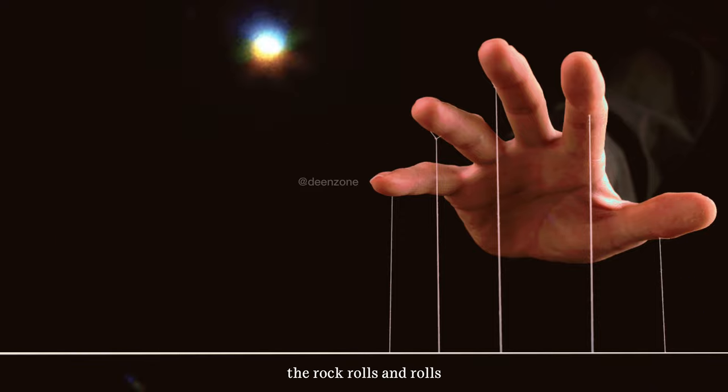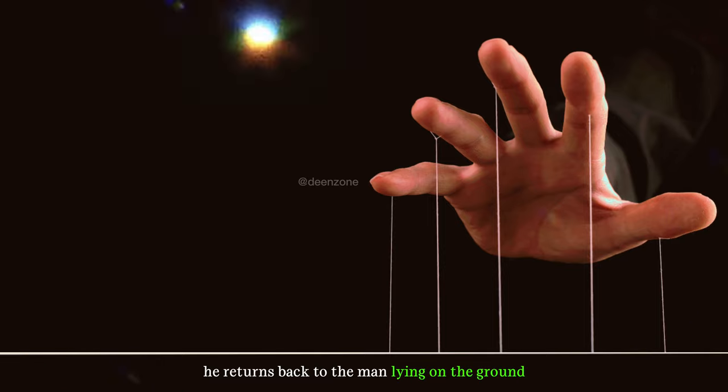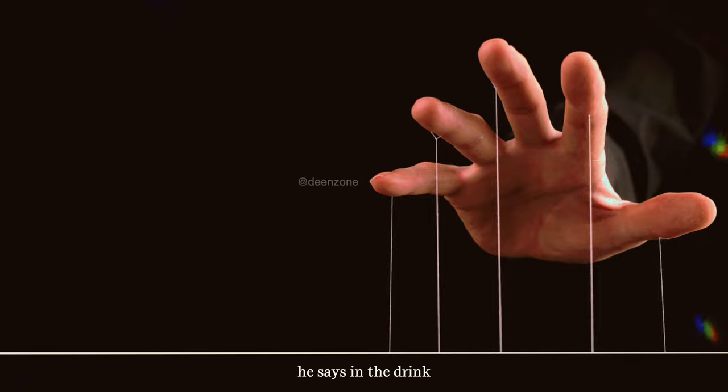Rasulullah says: that rock rolls and rolls. So the thrower runs after the rock to pick it up. By the time he picks up the rock, he returns back to the man lying on the ground. His head comes back to normal, as if nothing happened. And he does it again, he smashes the head. The pain is fresh, continuous.